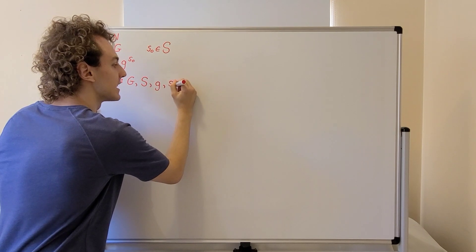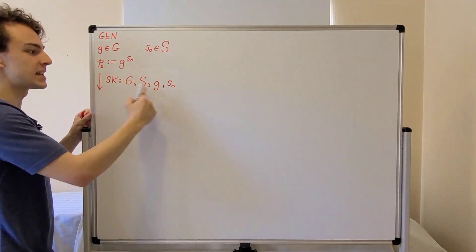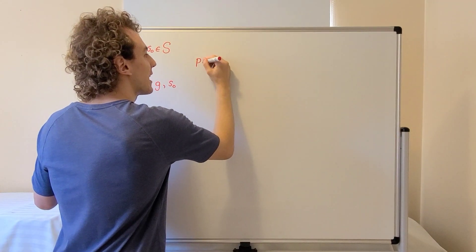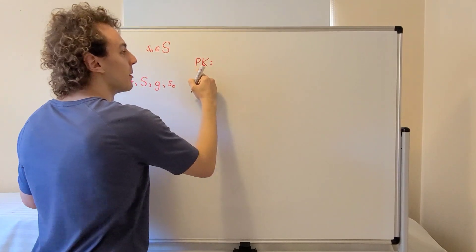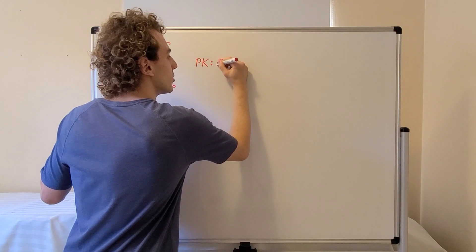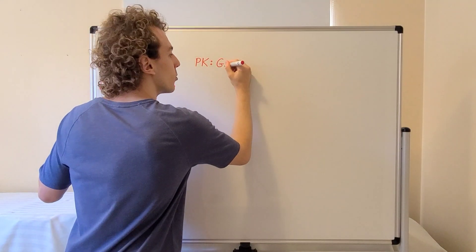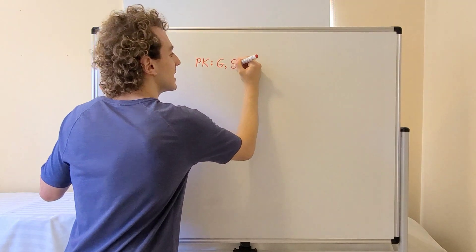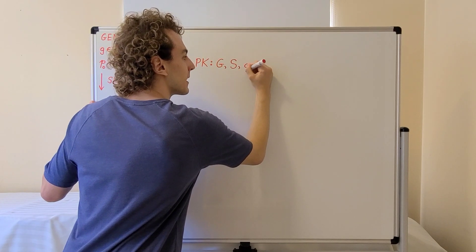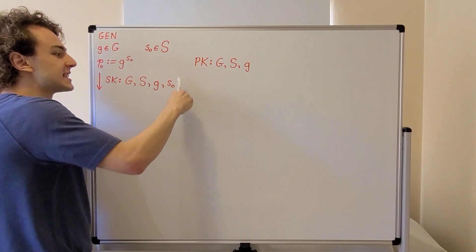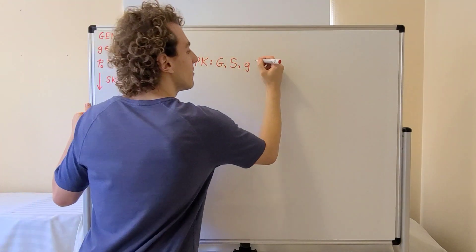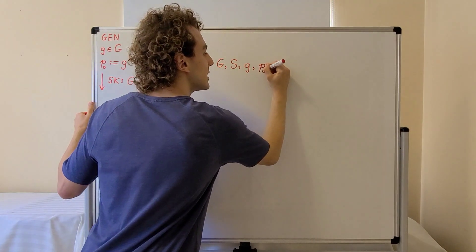The public key is paired with the secret key. The public key PK also includes context information: the group we're using, the set S from which secret values are chosen, and the generator. What is different is that we do not include the secret value in the public key, since it will be sent through a public channel. Instead, only the public value p0 appears in the public key.